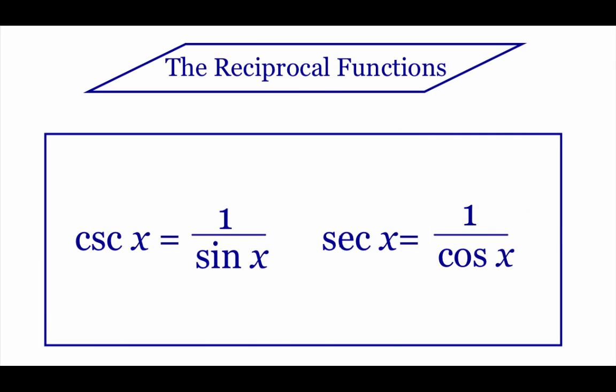Just as a quick reminder, remember that cosecant is the reciprocal of the sine, and secant is reciprocal of the cosine, and we're actually going to use those ideas later on when we graph these things out.